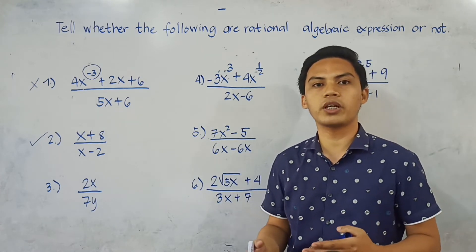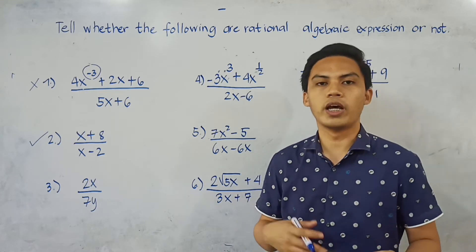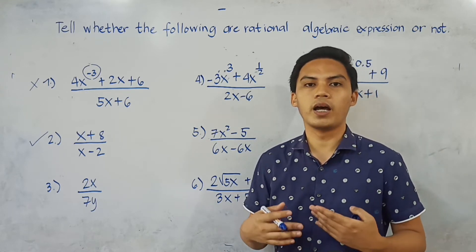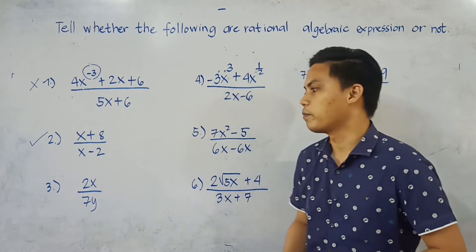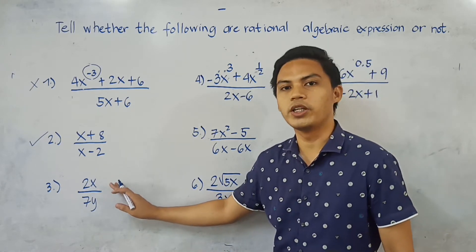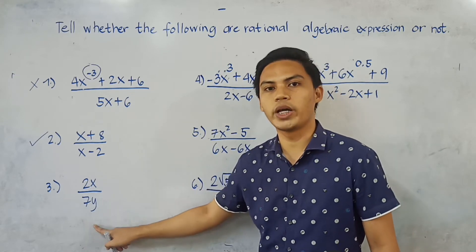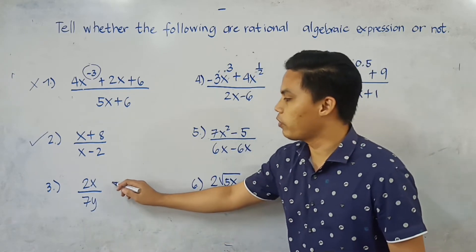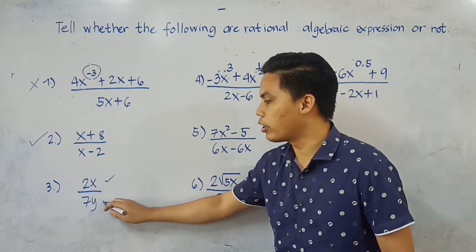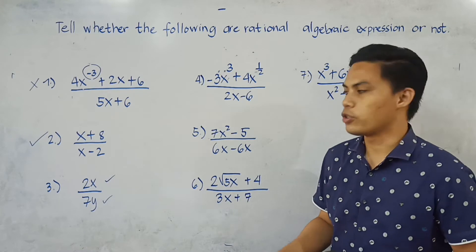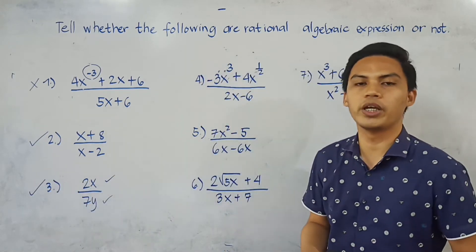An algebraic expression is composed of constants and variables separated by operations like addition, subtraction, and others. Number 3: We have 2x over 7y. The numerator is a polynomial and the denominator is also a polynomial. So number 3 IS a rational algebraic expression.